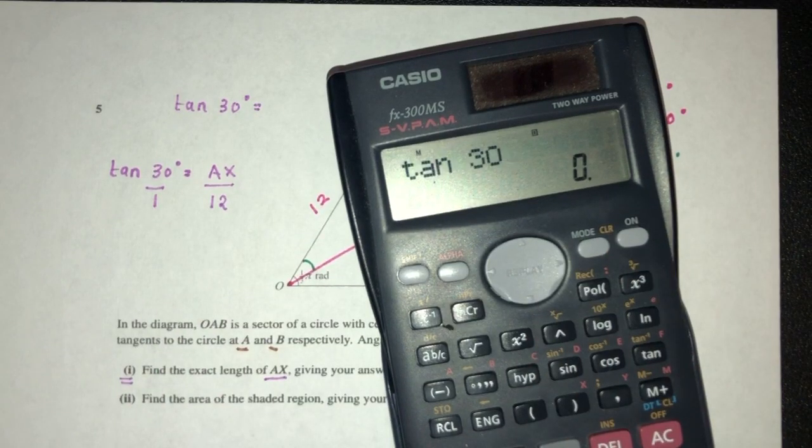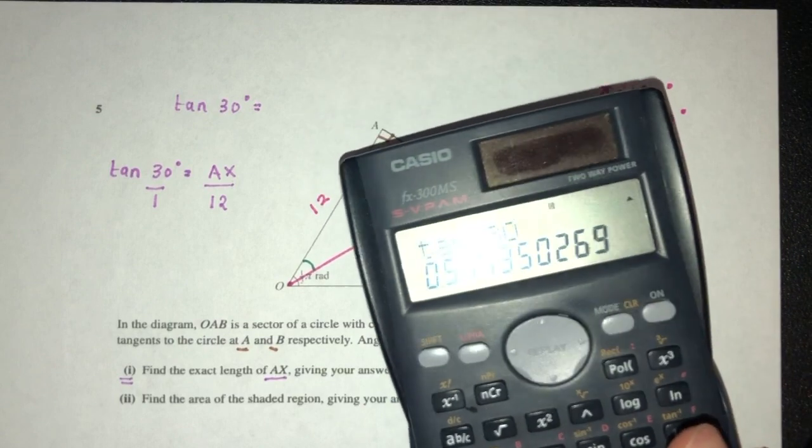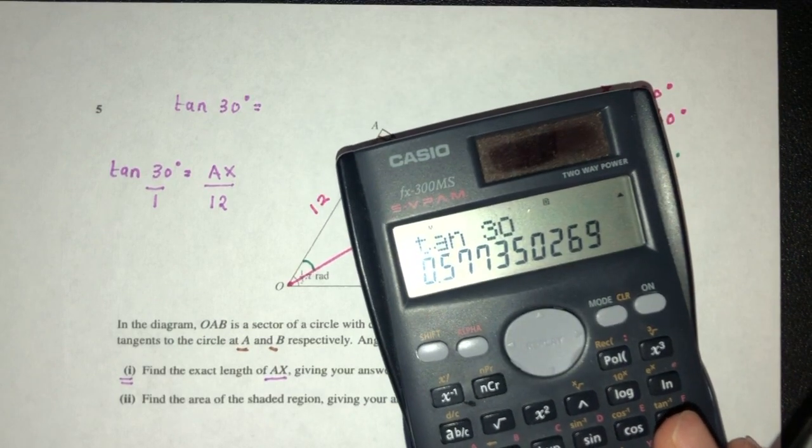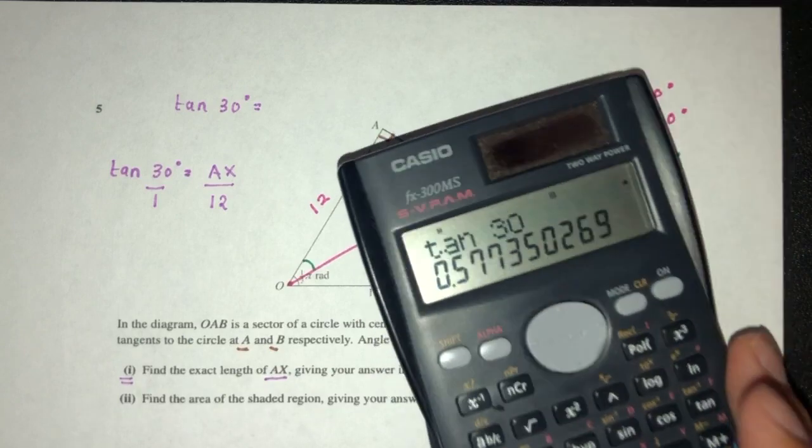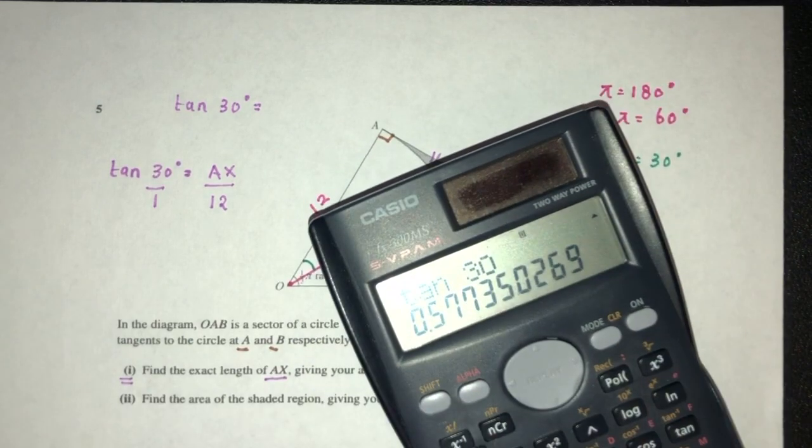So tan 30 degrees, how do we find this? Using the calculator you have now should be fine. However, let me try to show you guys. For example, I do know that sin 30 is 0.5.